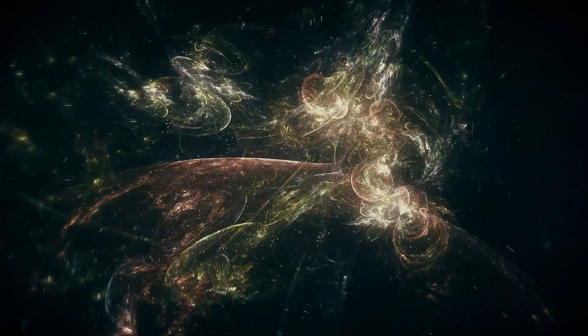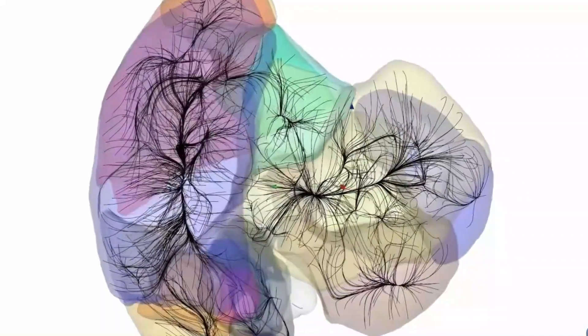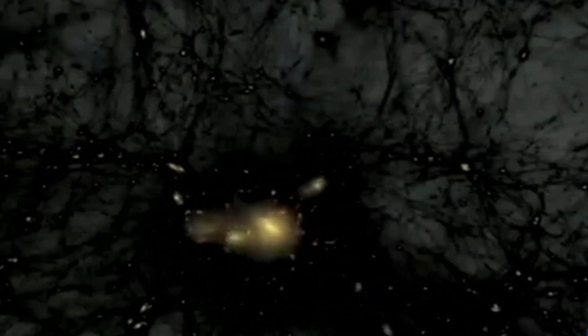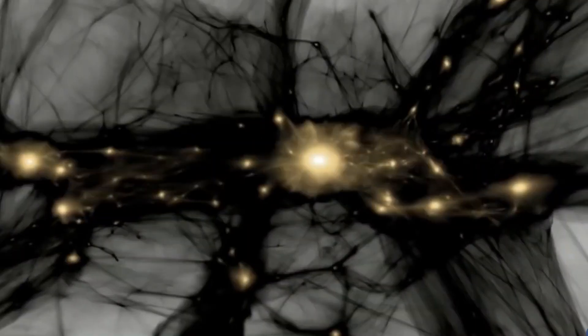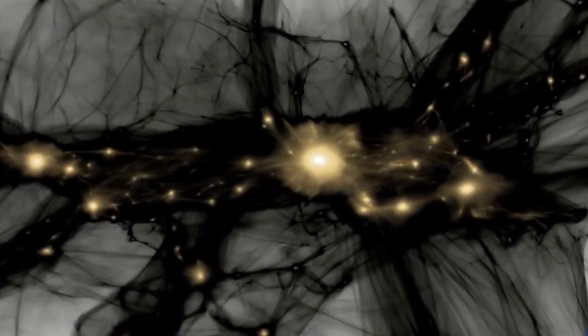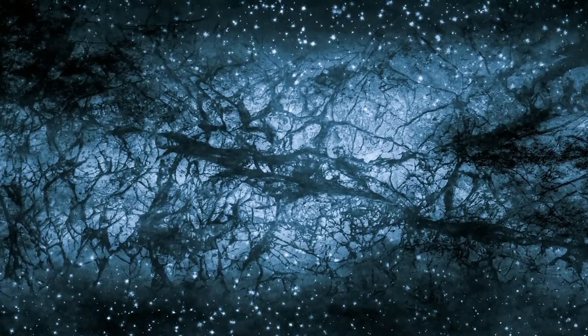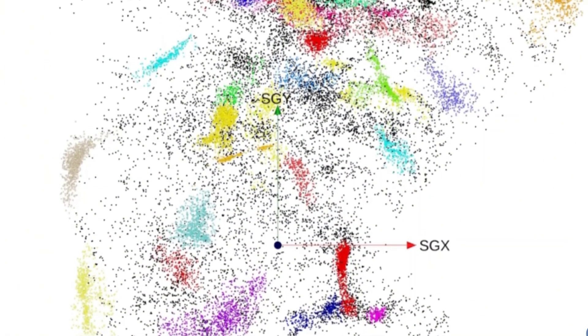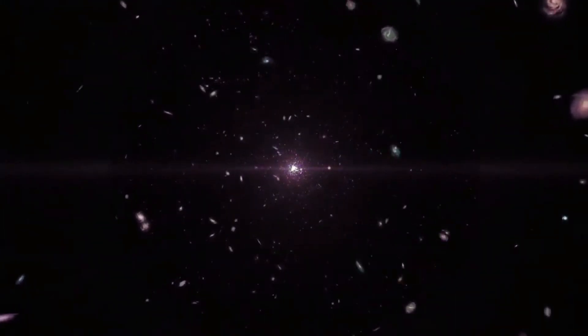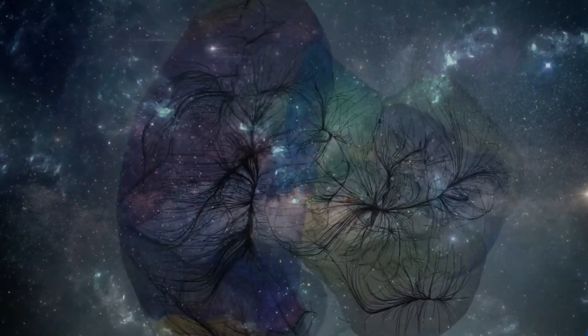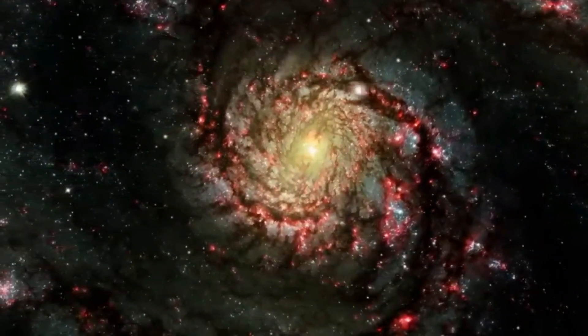A key element in understanding these giant structures is dark matter. While invisible, dark matter exerts a gravitational force that shapes the universe's large-scale structure. The discovery of a massive basin of attraction like the Shapley supercluster highlights the significant role that dark matter plays in holding these structures together. Without dark matter's gravitational pull, such vast systems could not exist as they do today. These basins raise fundamental questions about the distribution of dark matter. Current models may need revision to explain how dark matter interacts with ordinary matter and cosmic expansion. The existence of larger basins implies that dark matter's distribution might be more diffuse than previously thought, or that its gravitational influence operates in ways we do not fully understand.